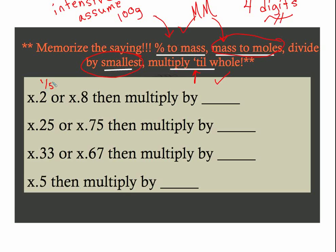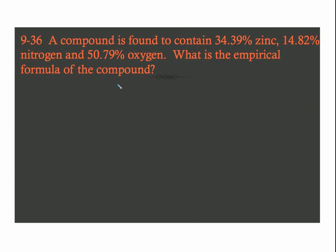To multiply till whole, if you end up with anything 0.2, 2.2, 5.2, 20.2, it doesn't matter, or 0.8, which is four-fifths, you're going to multiply by five. And you multiply all of the mole ratio values by five, not just the one that needs it. If you end up with a quarter or three quarters, like 1.25, 0.25, we're going to multiply by four. If it's a third or two-thirds, multiply by three. And if it's a half, multiply by two.